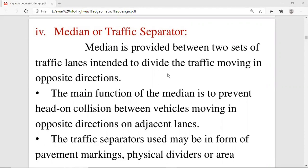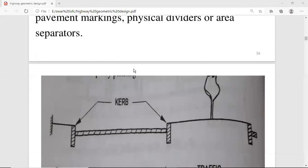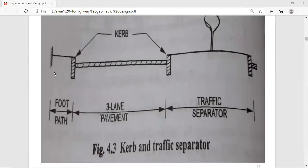It provides physical dividers and area separators. For example, there is a lane in which my vehicle will move. This is my pavement. The portion in between is called Traffic Separator. Generally, what happens is that we have a tree, a stone, something beautiful, or there are road lights for traffic.